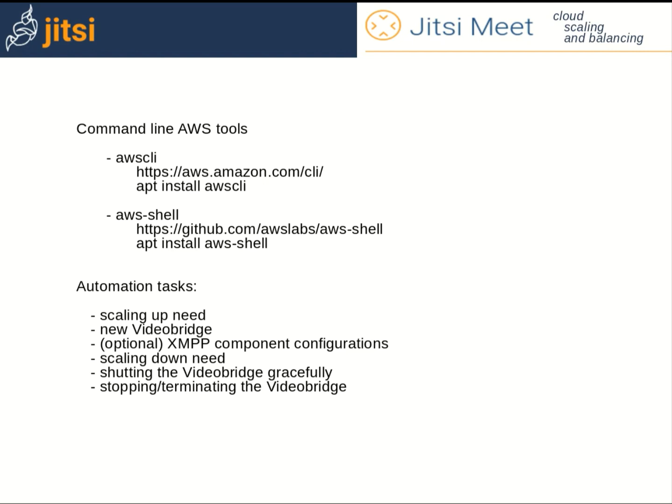The automation needed is the following. First, detection of scaling up need, like high load or high network traffic to and from the video bridge. Then, launching of a new video bridge in the scaling group. The next step is optional and depends on your setup: configuration of XMPP component name and secret in Prosody and in the video bridge, plus Prosody reload. Then, detection of the scaling down need, shutting the video bridge gracefully and waiting for all its conferences to end, then stopping and terminating the unneeded video bridge.